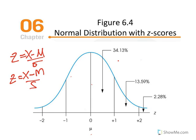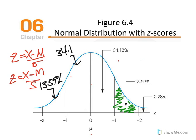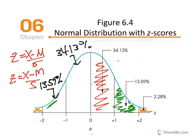Figure 6.4 also indicates the percentage of scores between one and two standard deviation units. This area accounts for 13.59% of all the scores, and since the characteristic of a normal distribution is that it's symmetrical, that's the same proportion on the other end as well. Beyond two standard deviation units, that accounts for 2.28% of any normal distribution — a mirror image on either side of the distribution.